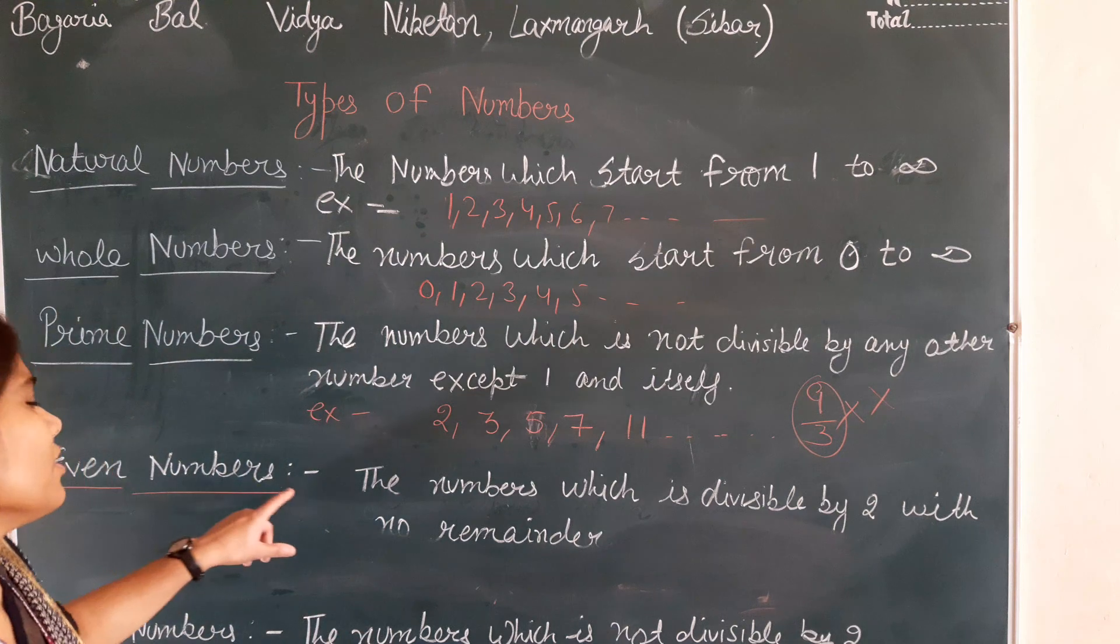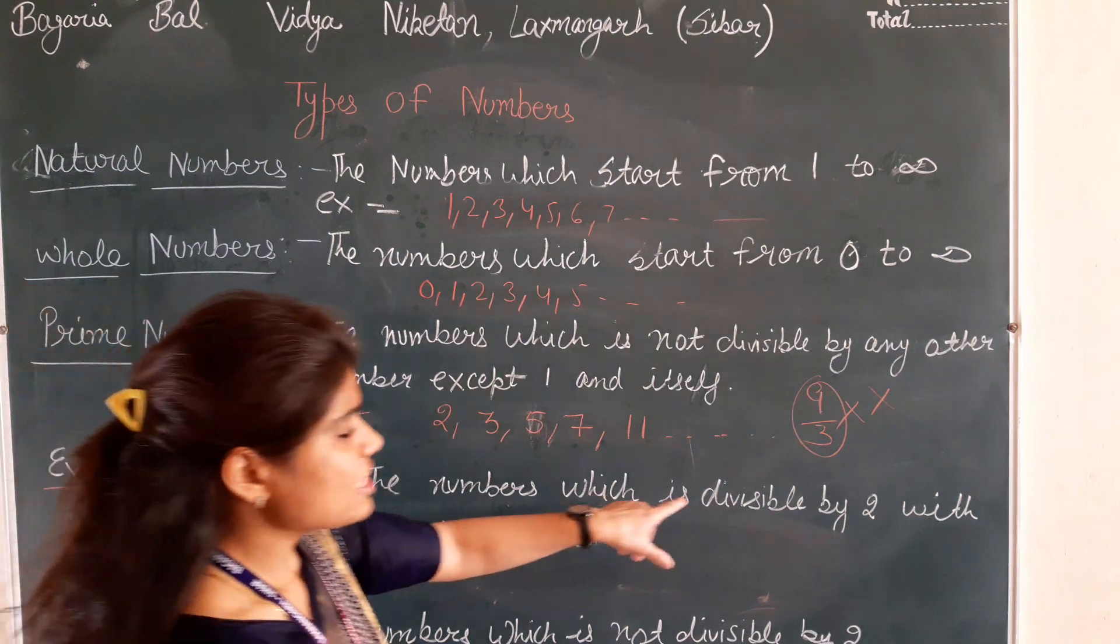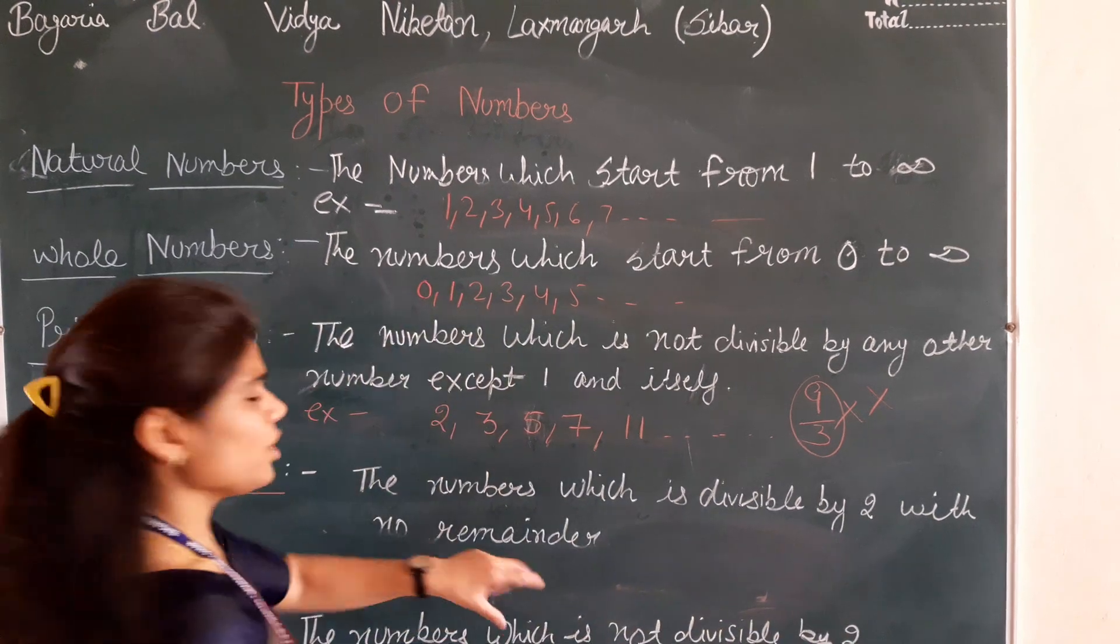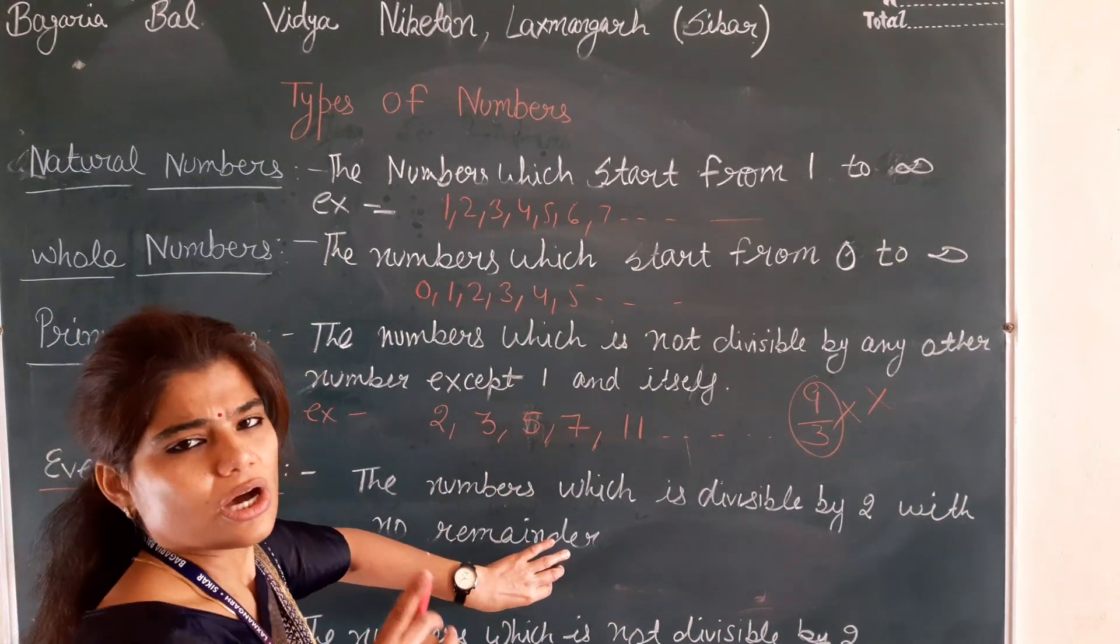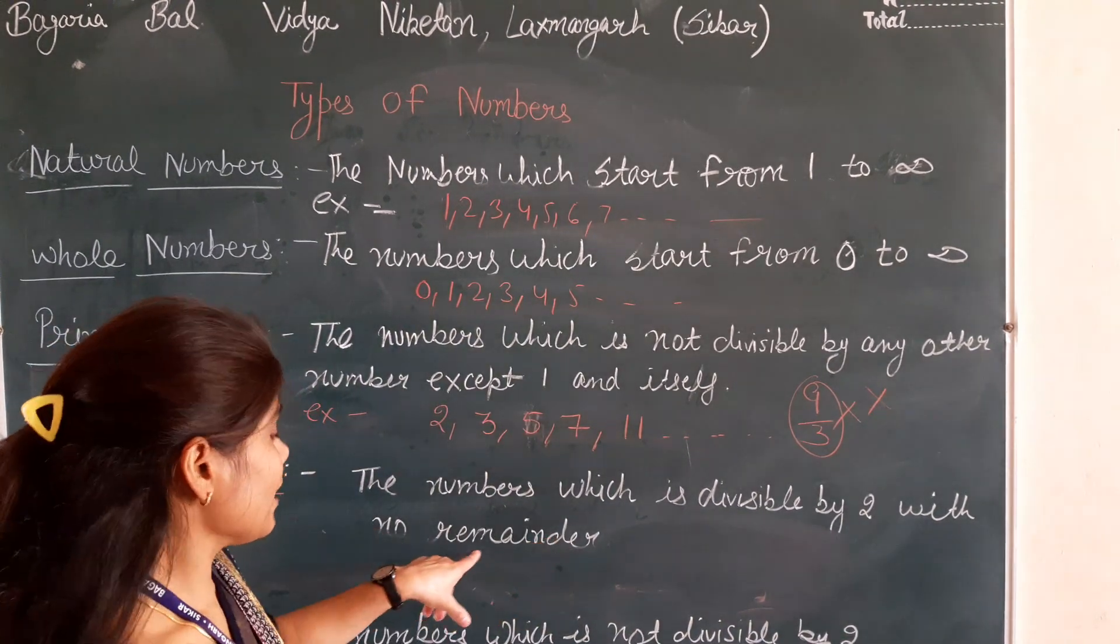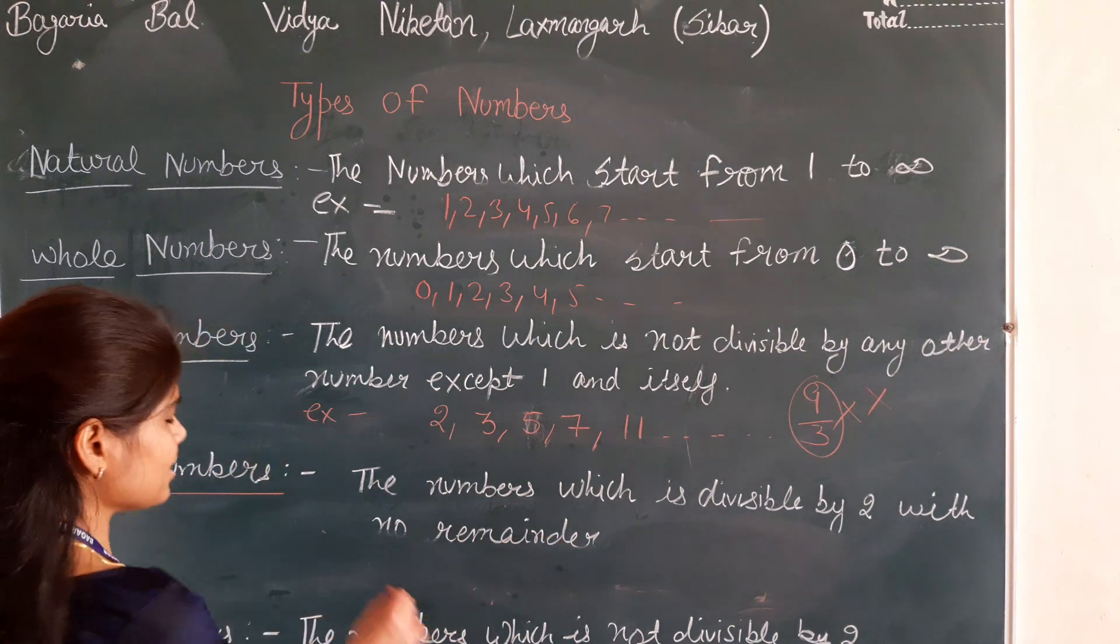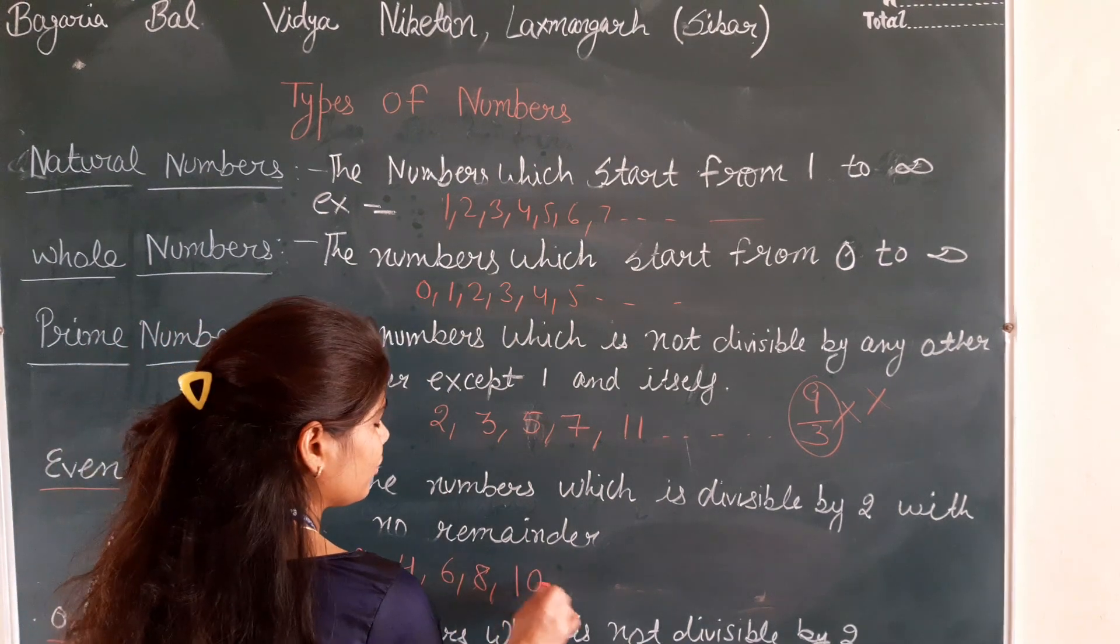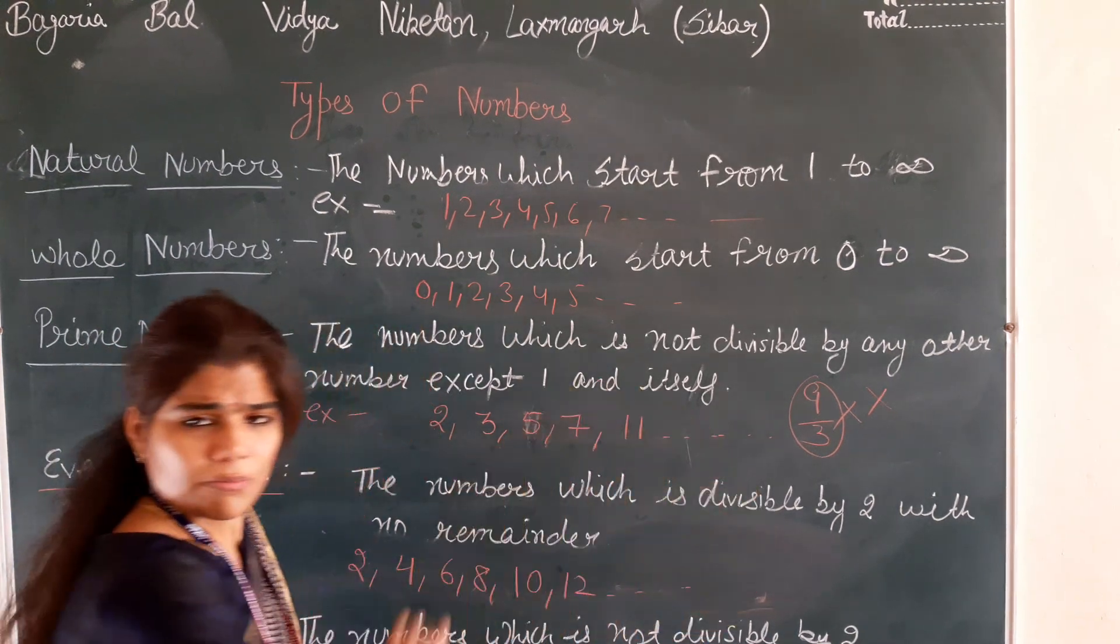Next, even numbers. The numbers which are divisible by 2 with no remainder are called even numbers. Examples: 2, 4, 6, 8, 10, 12. There are many numbers.